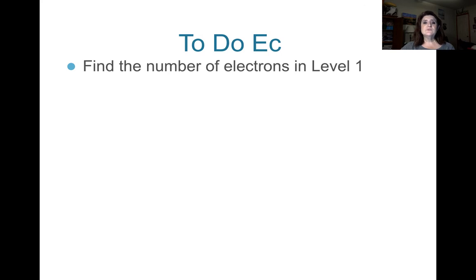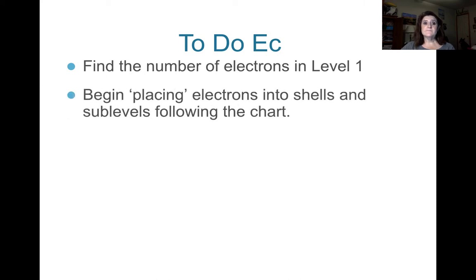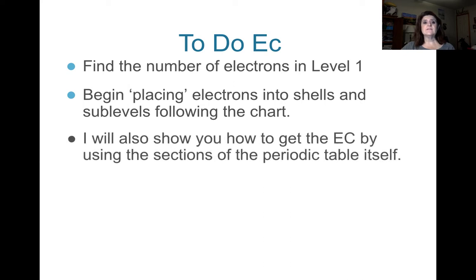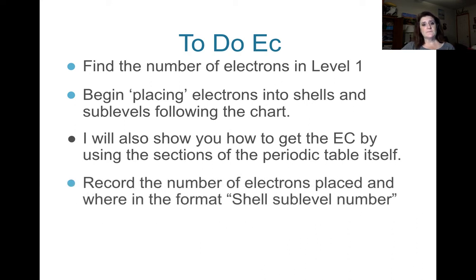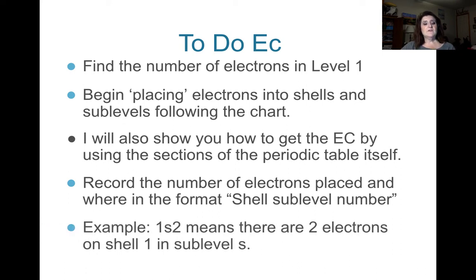In order to do the electron configuration, step 1 is to find the number of electrons in level 1. Then you begin to place the electrons into shells and subshells following the chart. I'll also show you how to get the electron configuration itself by using the periodic table. And then your record is the number of electrons placed and where in the format of shell, sublevel, and number. So for example, a 1s2 means in shell 1 in sublevel S, there are two electrons there.